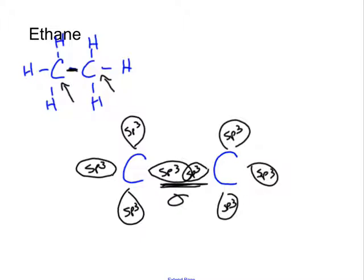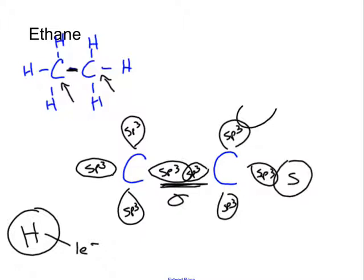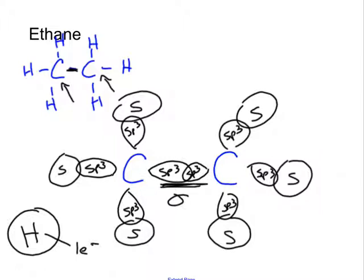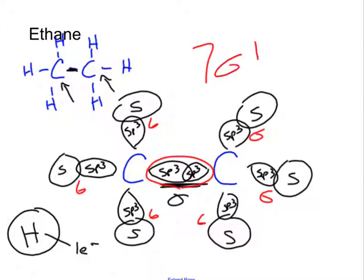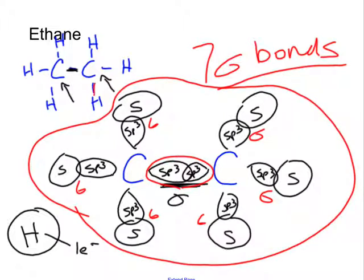The S orbital of each hydrogen head-to-head overlaps with the sp3 orbitals from our carbons, creating six additional sigma bonds. So we have a total of seven sigma bonds in ethane. You don't need to draw all this out — just look at the Lewis structure and count single bonds. One, two, three, four, five, six, seven single bonds means seven sigma bonds.